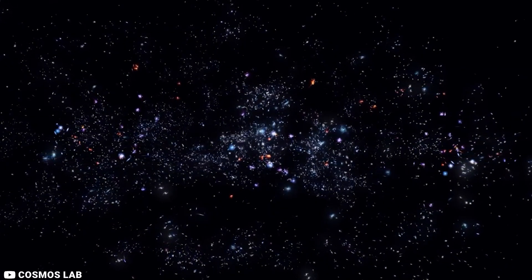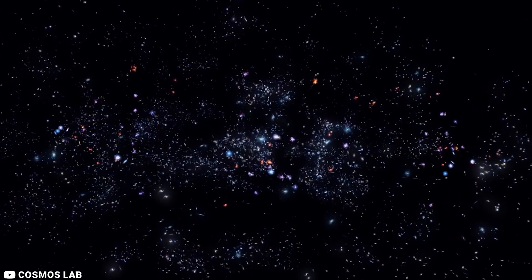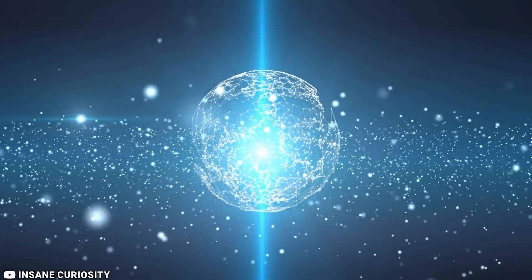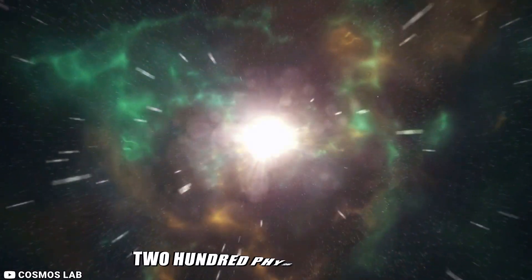No one can say for certain where Muons fall in the grand scheme of things. Radiatively decaying into a flurry of electrons and neutrinos, they are created during collider events and by cosmic ray collisions.